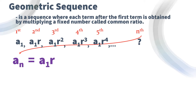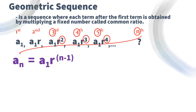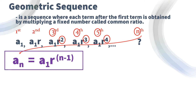Let's observe the given terms and their positions. On the fifth term, we have r raised to 4. On the fourth term, we have r raised to 3. On the third term, r raised to 2. On the second term, r raised to 1. And the first term, r raised to 0. Notice that the position of the term has something to do with the exponent of r — we just subtract 1 from the position to get the exponent. So if our position for the nth term is n, we subtract 1 from n, giving us n minus 1 as the exponent of r on a sub n.